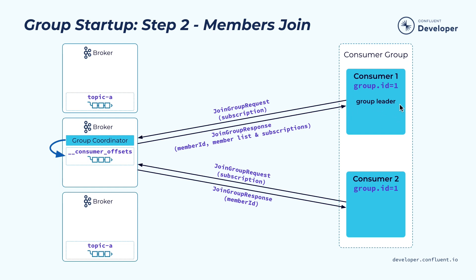The group coordinator will let the group leader make the decision of assigning work among those members. It will include all the member information, including member IDs and the subscription, back to this group coordinator. For the rest of the non-group-leader consumer instances, it will just send its member ID.